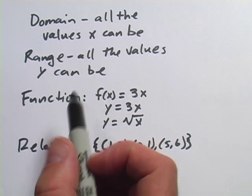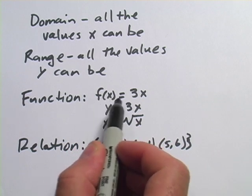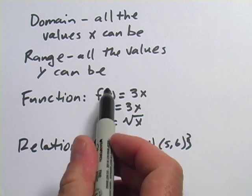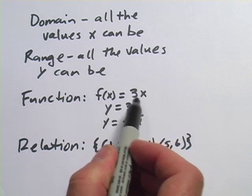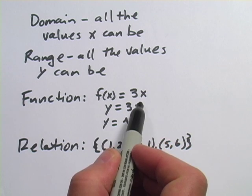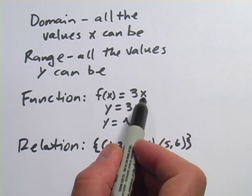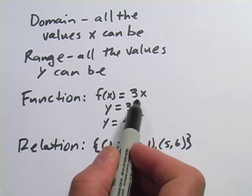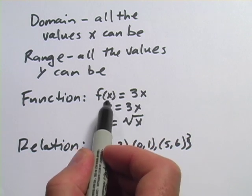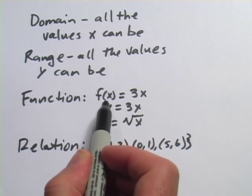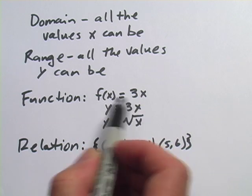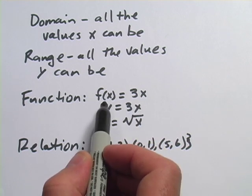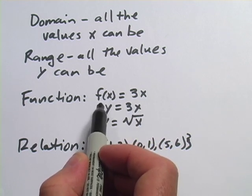Usually we talk about domain and range with functions. Here's one: f(x) equals 3x. f(x) is sort of interchangeable with y — it's just a different notation. The domain of this function would be everything that x could be. In this function, you could plug in anything for x. You can take any number and multiply it by 3, so the domain is all real numbers. And the range would also be all real numbers, because you can get every possible y value by putting in some value for x.